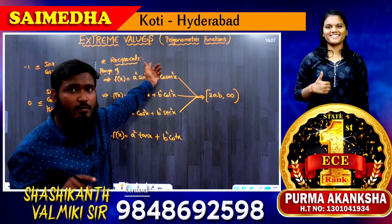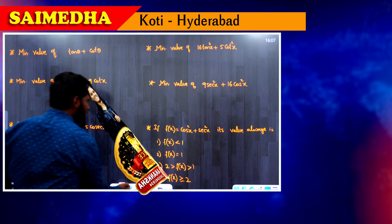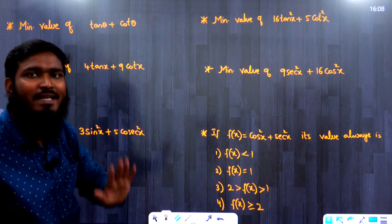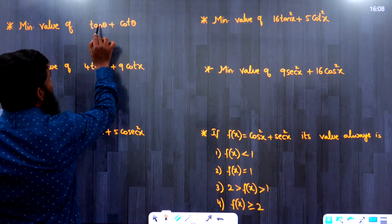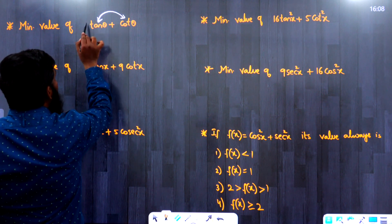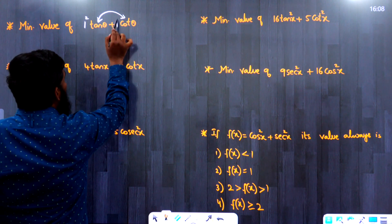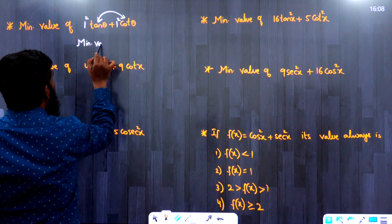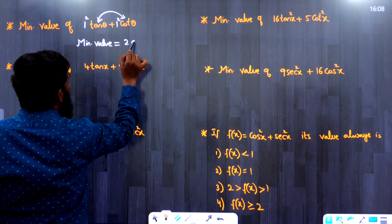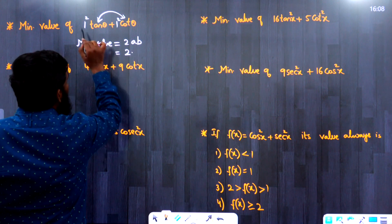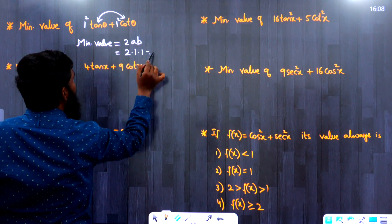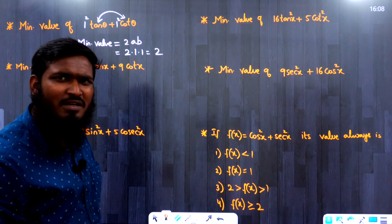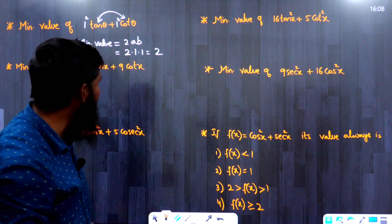First question: minimum value of tan θ + cot θ. Here tan θ and cot θ are reciprocals. The coefficient of tan θ is 1 = 1², and the coefficient of cot θ is 1 = 1², so a = 1 and b = 1. Minimum value = 2ab = 2 × 1 × 1 = 2.